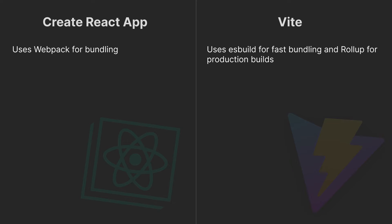Create React App uses Webpack for bundling, while Vite uses ESBuild for fast bundling and Rollup for production builds. Bundling is the process of merging and optimizing multiple JavaScript files — sometimes CSS and HTML as well — into fewer files, often just one or a few. It helps in improving site load times and performance.